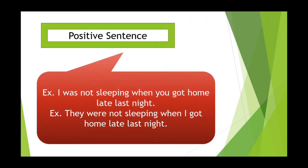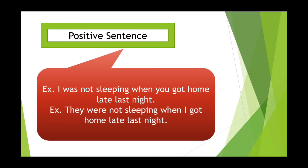To make a positive sentence, that was the structure and helping verbs needed. Now we have examples. 'I wasn't sleeping when you got home last night' — here 'wasn't sleeping' is past continuous tense. In the second example: 'They were not sleeping when I got home late last night.' 'They' is plural, so we use 'were' + not + first form verb + ing.